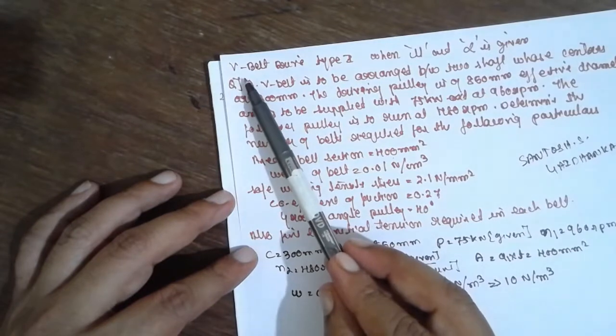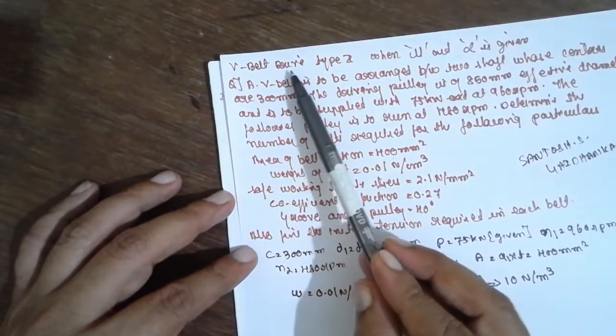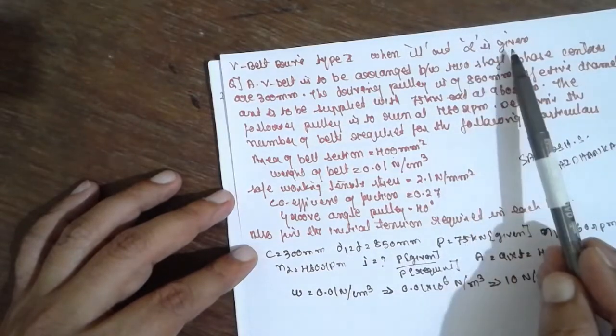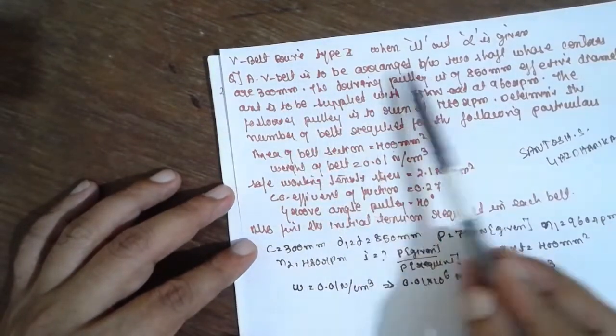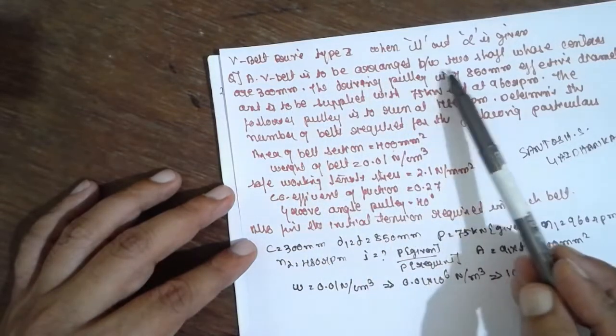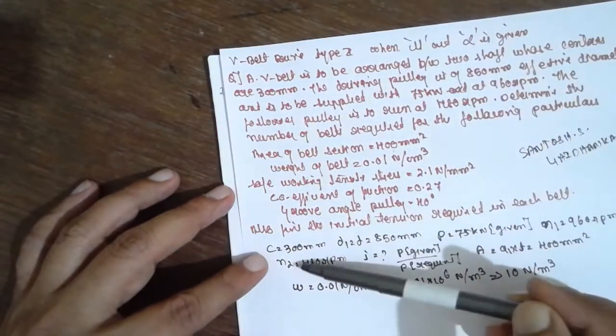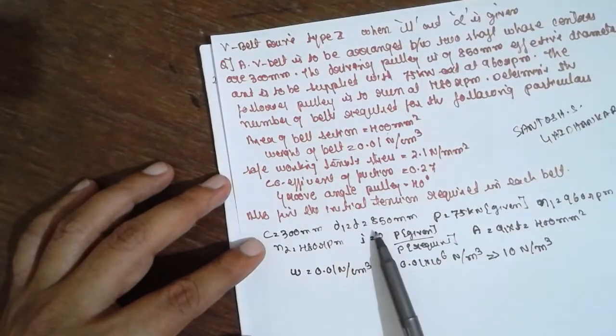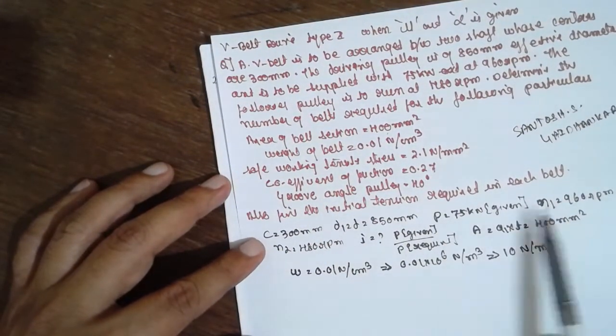Today we are teaching about the V-belt drive in the type 1 problem when mu and gamma is given. This is the question: a V-belt is to be arranged between shafts at close center distances 3 mm. The data is given here. The diameter is given, v is given, N1 is given, N2 is given, and we have to find out the number of belts required, that is P given to P required.